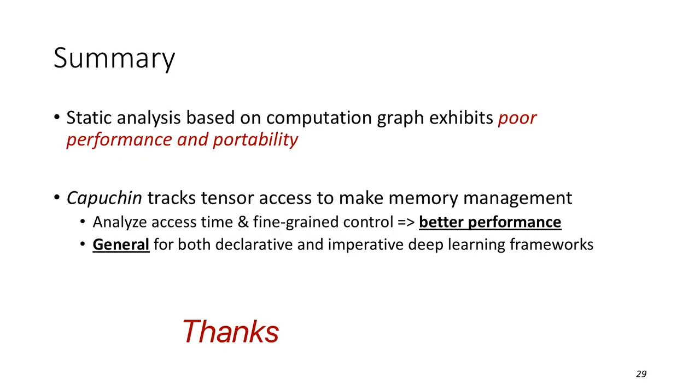Finally, let's summarize today's talk. Current memory optimization on deep learning training is based on static analysis on the computation graph, which delivers poor performance and portability. We propose Capuchin that tracks tensor access to make memory management through analyzing access time and fine-grained control to get better performance. And it's general for both declarative and imperative deep learning frameworks. Thank you.